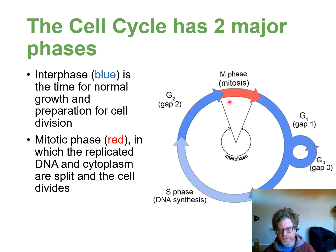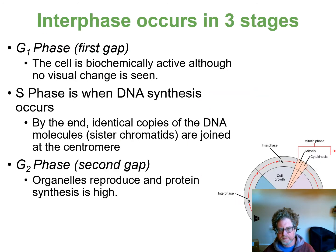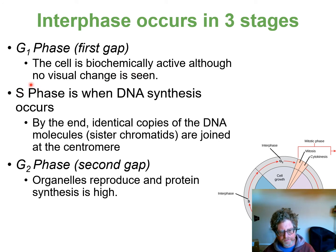Even though we'll focus on mitosis — when the DNA is actively dividing in the nucleus — most of the time in the cell cycle is spent in interphase. During interphase the cell is very biochemically active: it's growing, making more protein, replicating organelles, and replicating DNA. S phase stands for synthesis, which is when DNA replicates. Gap 2 involves organelle reproduction and more protein synthesis. Although you don't see changes in the nucleus, interphase is biochemically very active.